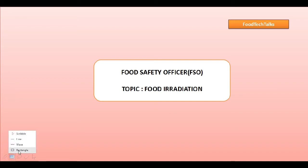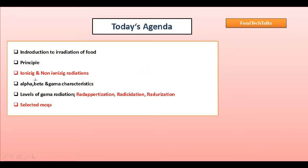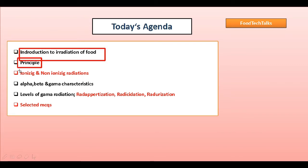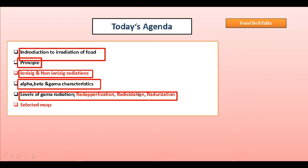Hello everyone, welcome back to my channel Food Tech Talks. In today's video we will discuss a new topic from the course of food safety officer exam, which is food irradiation. We are going to cover the following topics: introduction to food irradiation and its principle, ionizing and non-ionizing radiations, characteristics of alpha, beta, and gamma rays, levels of gamma radiation such as radurization, radicidation, and radappertization, and lastly some selected MCQs.